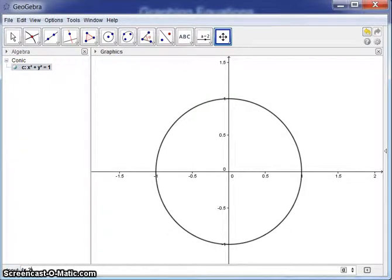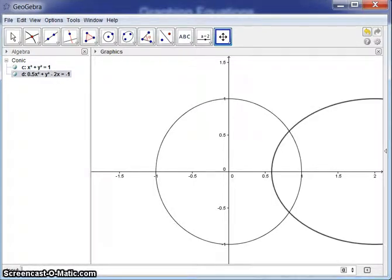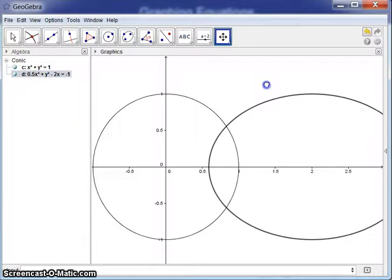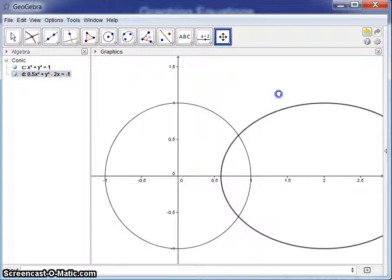(x minus 2) squared, that whole thing, divided by 2, plus y squared equals one. And GeoGebra will attempt to graph that. And the whole thing doesn't quite show up. But you can kind of start seeing the elliptical shape there. We can try to move, and it doesn't look like we're quite going to make it.